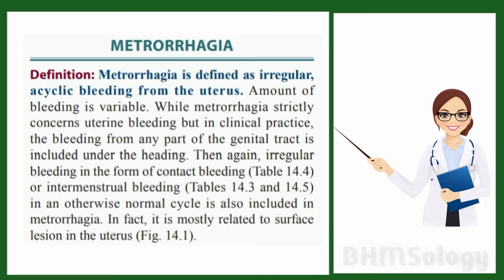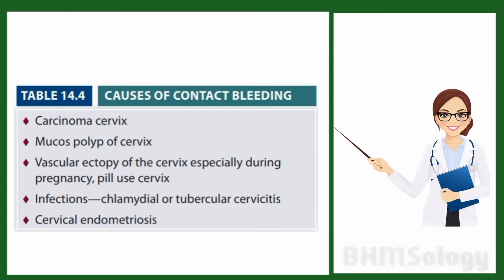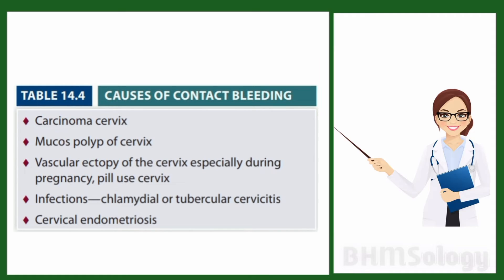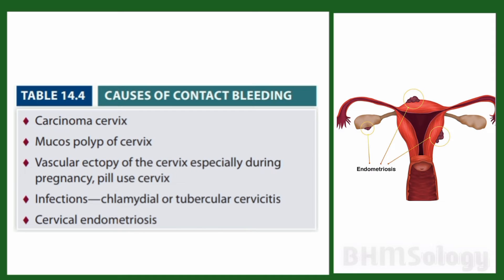Contact bleeding means kisi disease ya pathogenesis ke karen uterus se bleeding ho rahi ho, usse contact bleeding bolenge. Causes of contact bleeding are: carcinoma cervix, mucus polyp of cervix, vascular ectopic of cervix specially during pregnancy, pill use cervix, infection such as chlamydial or tubercular cervicitis, and cervical endometriosis.